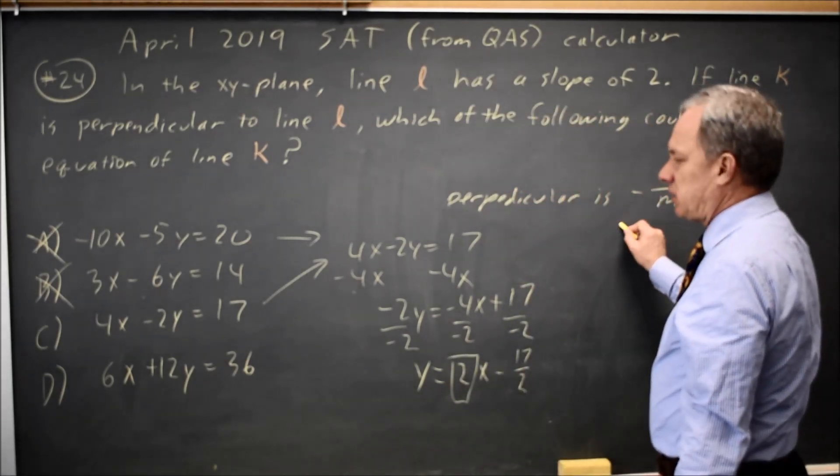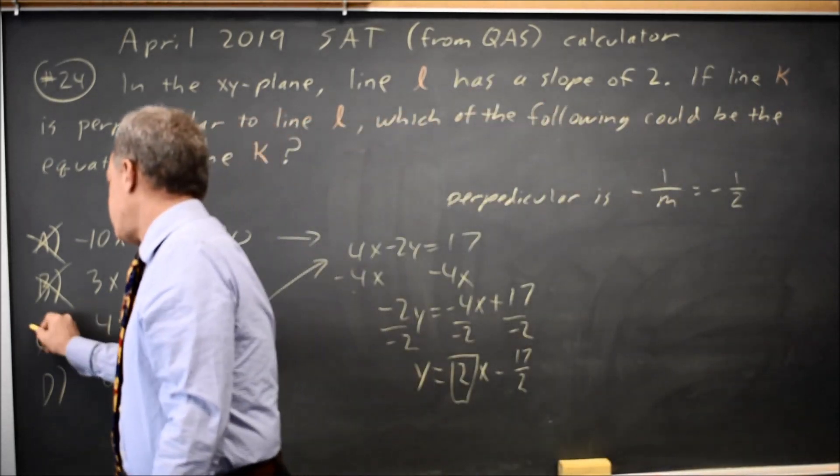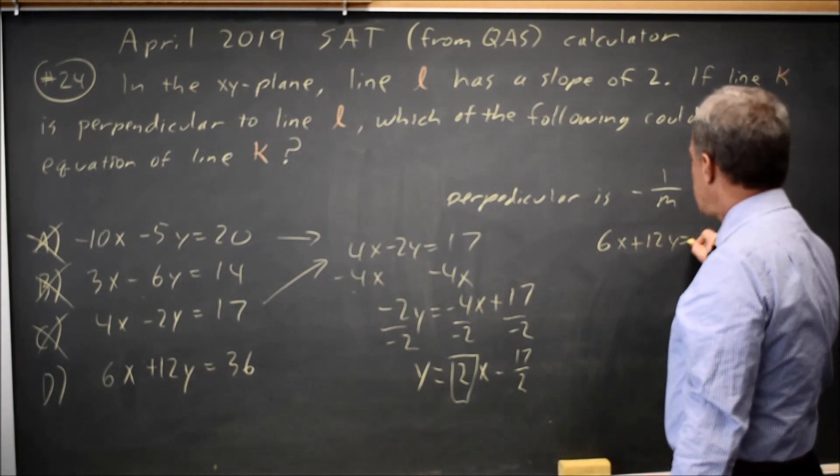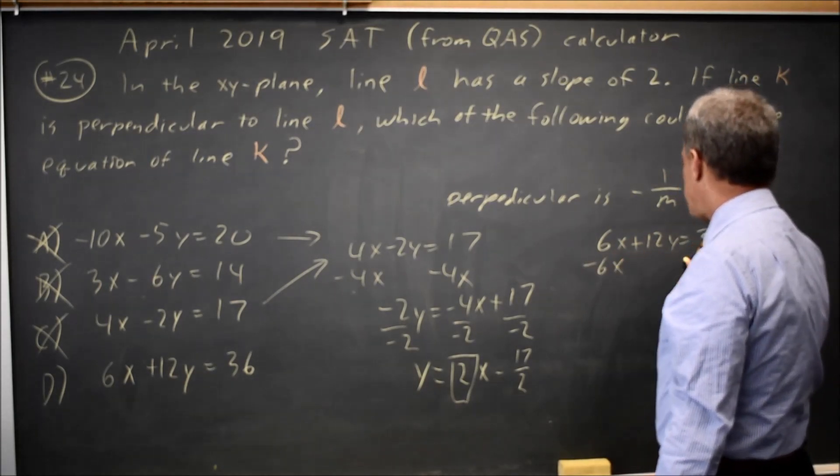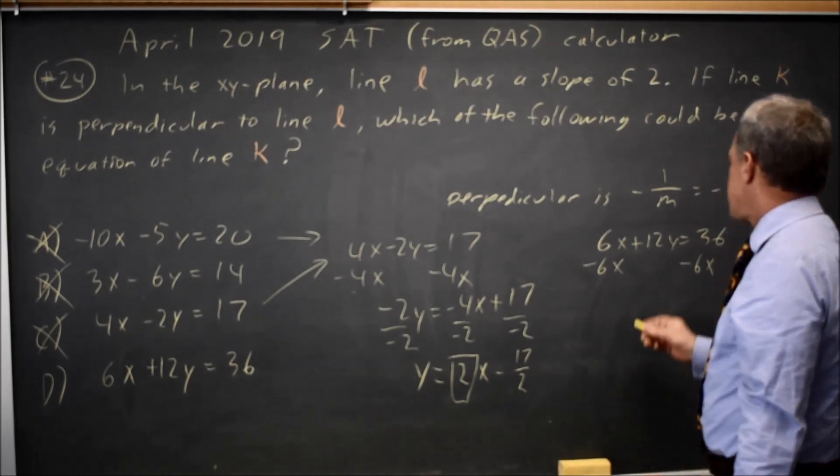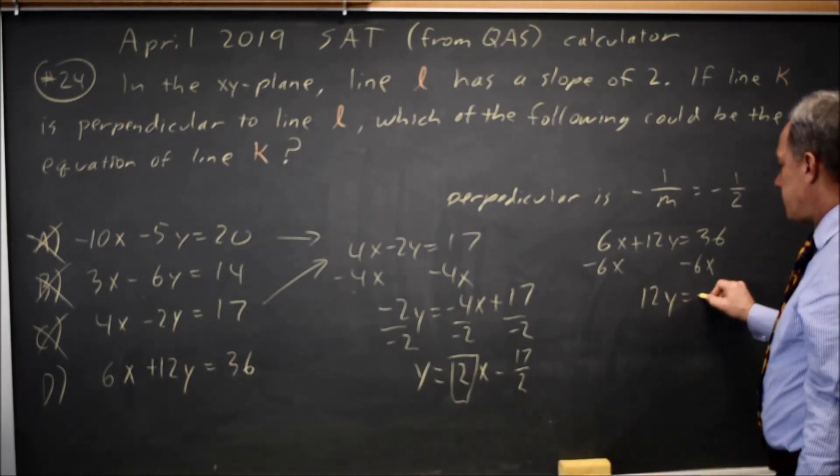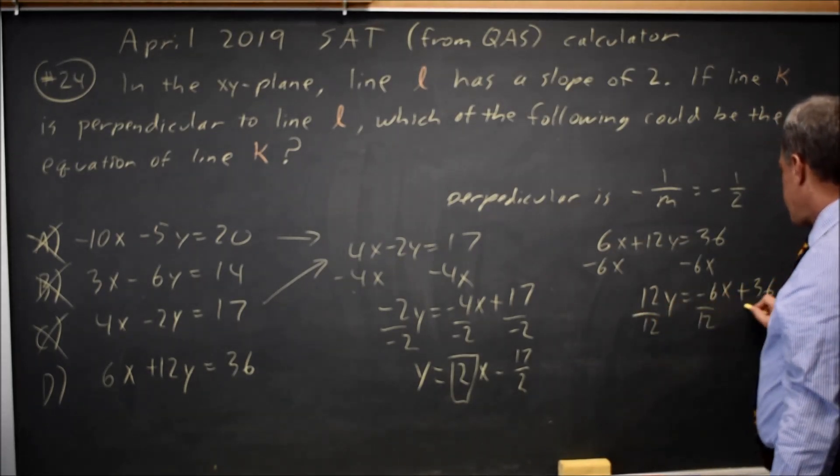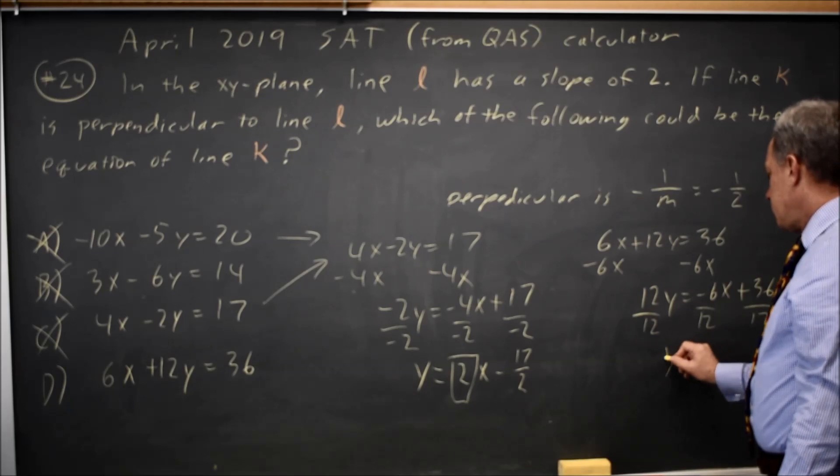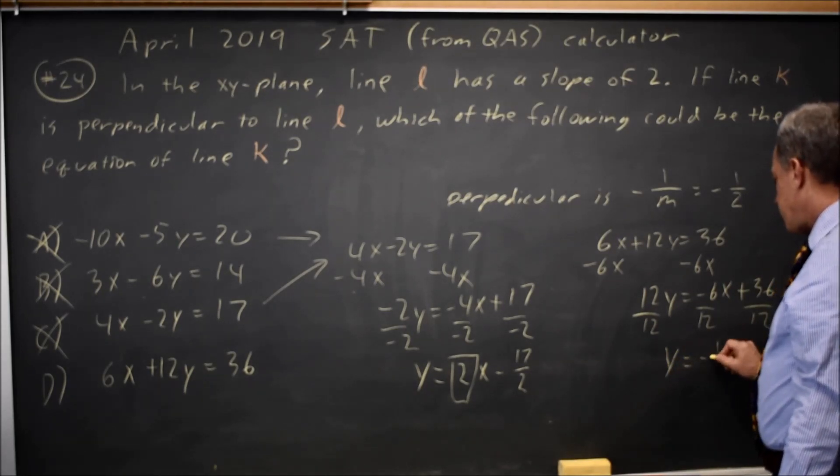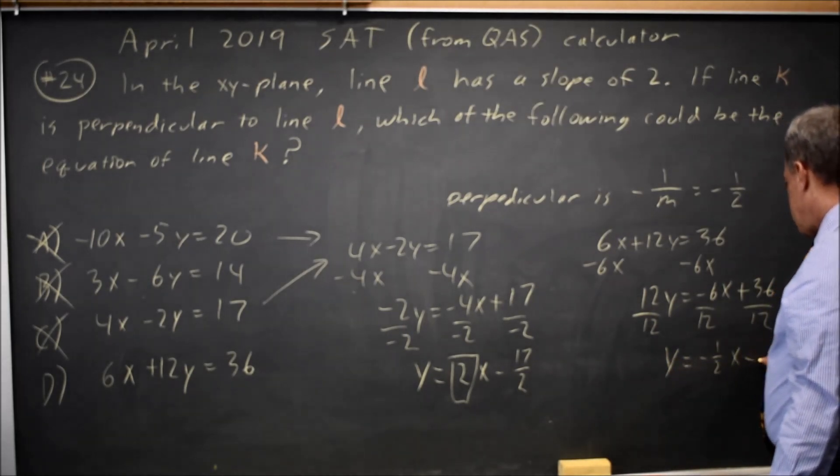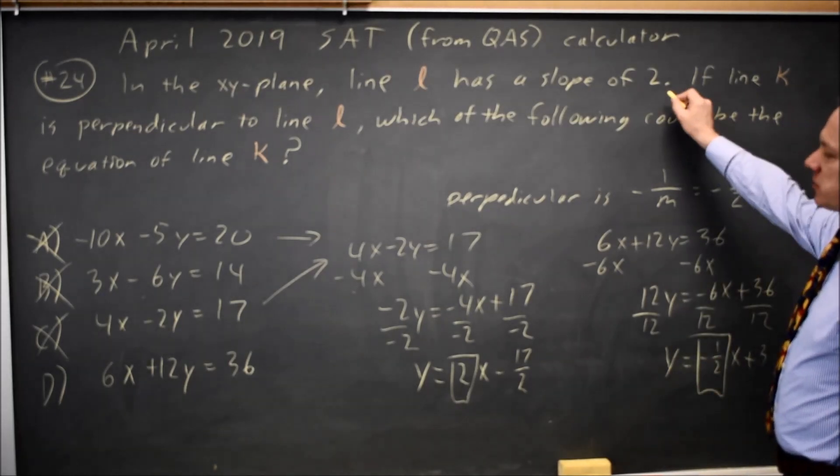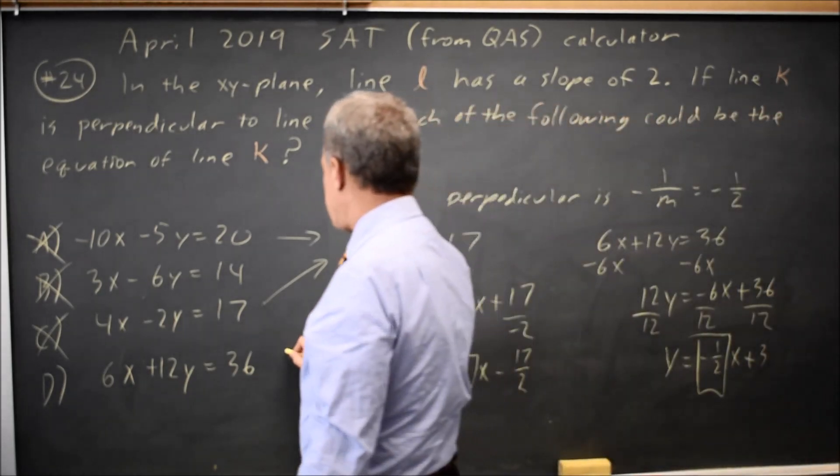So I'll try choice D. D gives me 6x plus 12y equals 36. Subtract 6x from both sides. Always do the same thing to both sides of the equation. 12y equals negative 6x plus 36. Divide by 12, y equals negative 1 half x plus 3. The slope is negative 1 half, which is perpendicular to a line of slope 2. So choice D would be the correct answer.